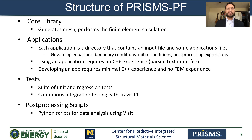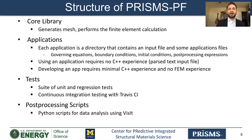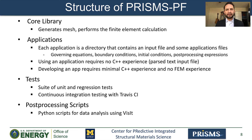Here is a brief overview of the structure of PRISMS-PF. We have the core library, which is the backend part that performs all of the operations such as generating the mesh, applying boundary conditions, applying initial conditions, and doing the calculations at every time step. It is designed so that a typical user will not have to interact with it. Then we have the applications. Each application has a directory that contains a file for input parameters and simulation settings, as well as a few other files where the user can set the governing equations, boundary conditions, initial conditions, and post-processing expressions.